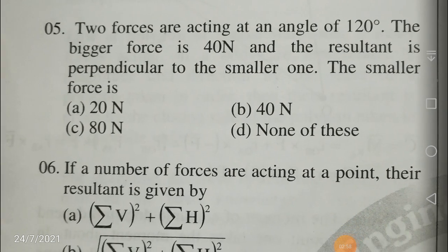Two forces are acting at an angle of 120 degrees. The bigger force is 40 Newtons and the resultant is perpendicular to the smaller force. Please draw a diagram: let P be the smaller force and Q be the bigger force. The angle between P and Q is 120 degrees. Draw a perpendicular — on the left side draw the x-axis, positive and negative, and y-axis positive and negative. The angle between Q and the negative y-axis should be equal to 60 degrees, so P should be equal to Q cos 60.